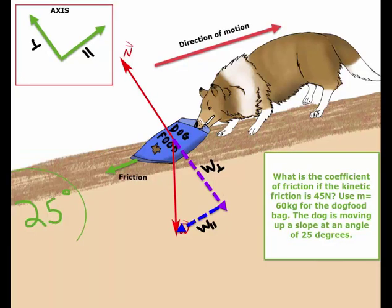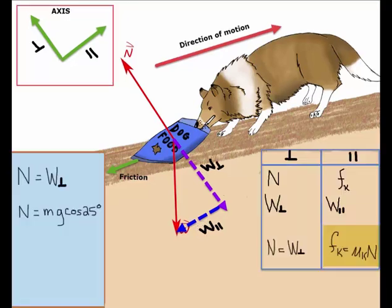So here is the question. We are going to look for the coefficient of friction if the kinetic friction is 45 newtons. This will be much easier to solve because we have already done the most difficult task of breaking up the force components. All we need to do now is use our two formulas and make a substitution.